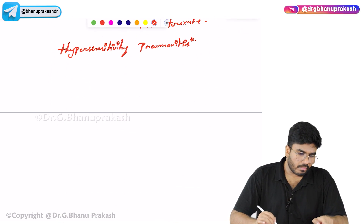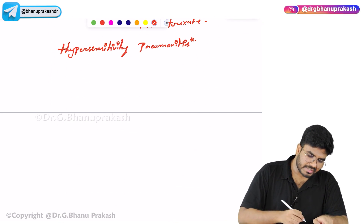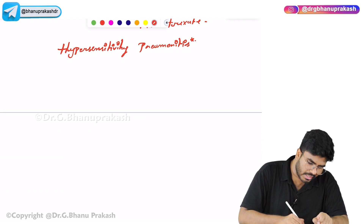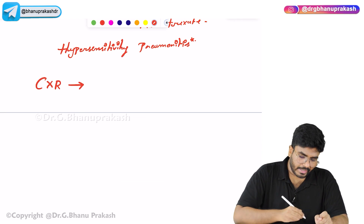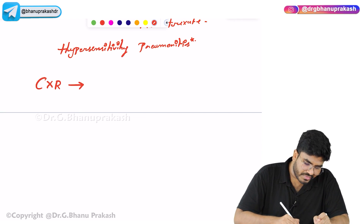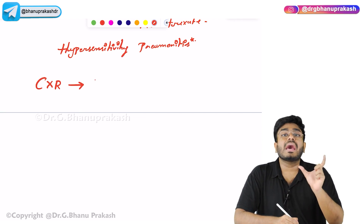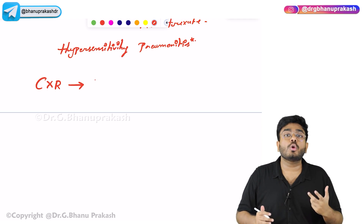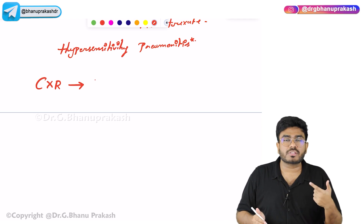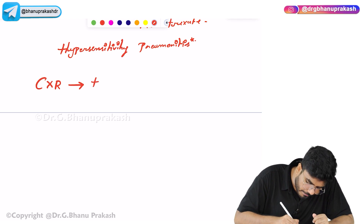If a patient is having interstitial lung disease, on chest X-ray it is going to show a reticulonodular pattern or honeycombing appearance. The lung fields are going to look like honeycombing because of the interstitial fibrosis.